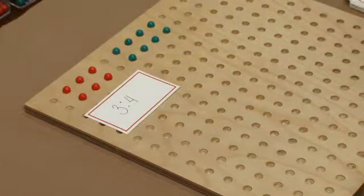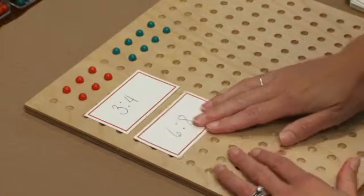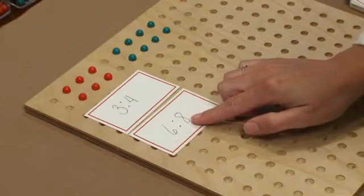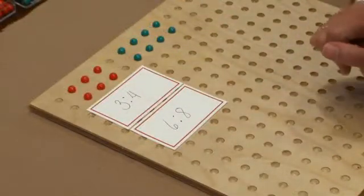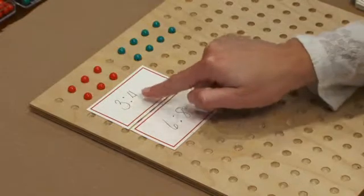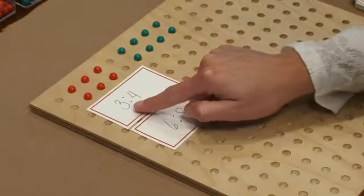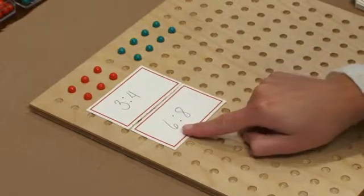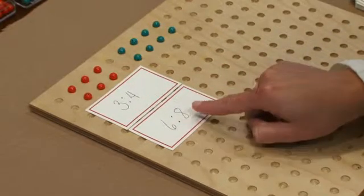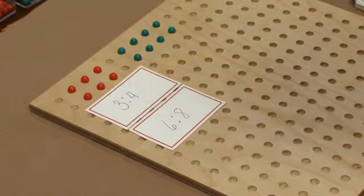And the students can write out the second row as six to eight. So we know that when we have a ratio, we're comparing the antecedent to the consequence. In this first ratio, three is the antecedent and four is the consequence. Here we have six as the antecedent and eight as the consequence.